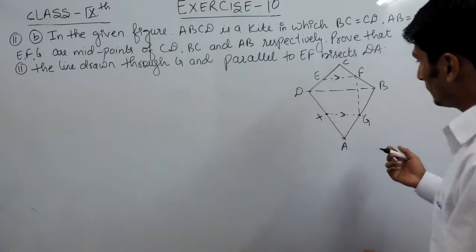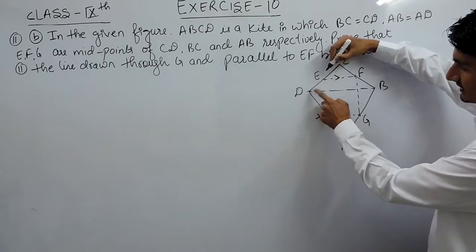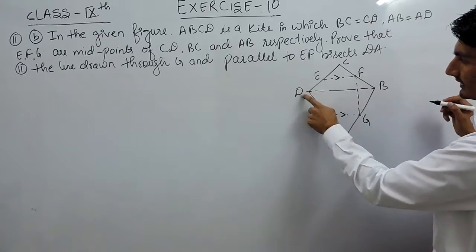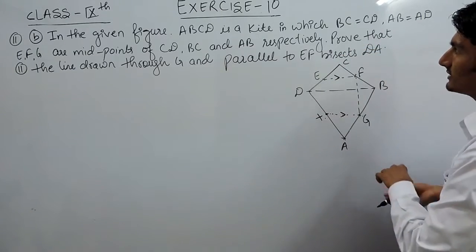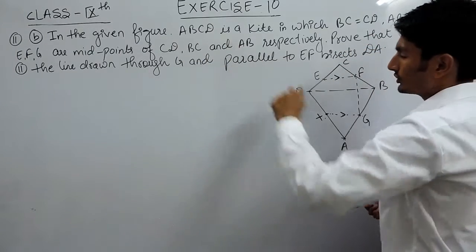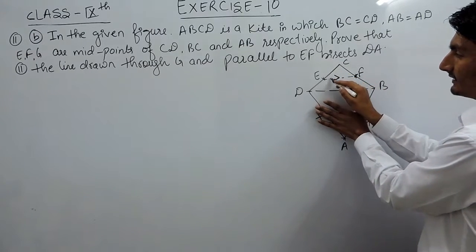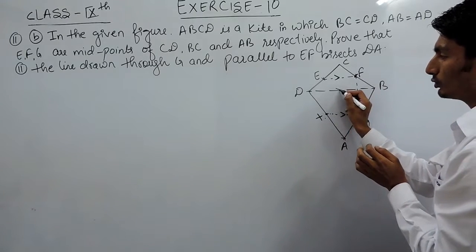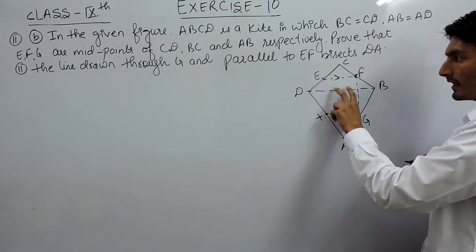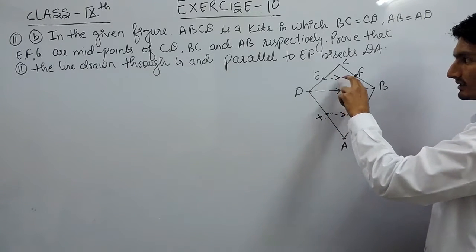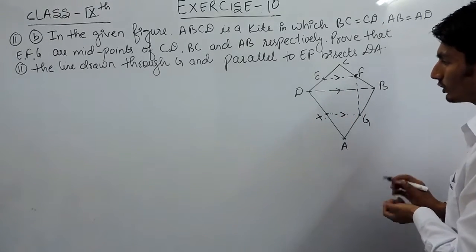First, if I look at triangle DCB — in this triangle, F and E are the midpoints, which is given in the question. If I join these two midpoints, clearly this line EF must be parallel to DB, and EF must be half of DB. Since EF is parallel to DB, and XG is given parallel to EF, clearly XG must also be parallel to DB.